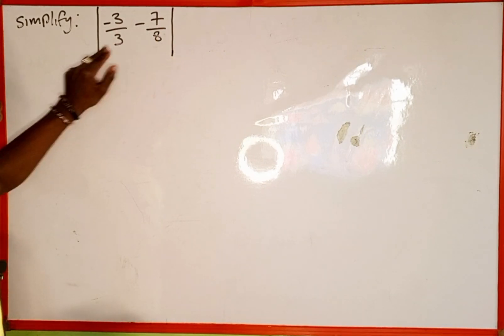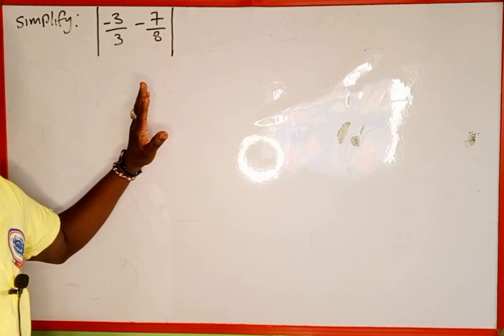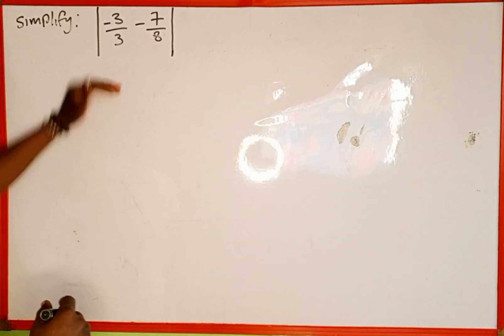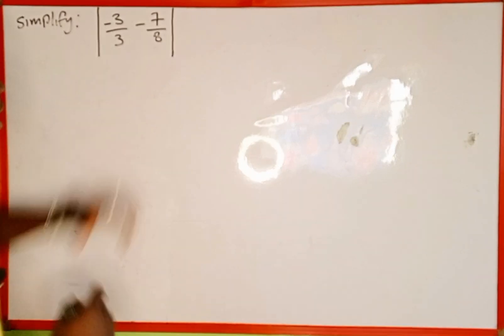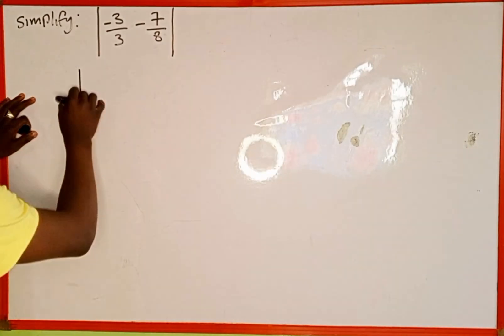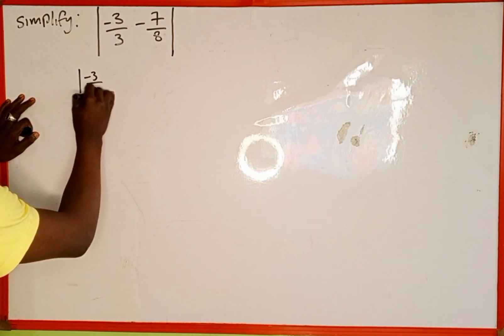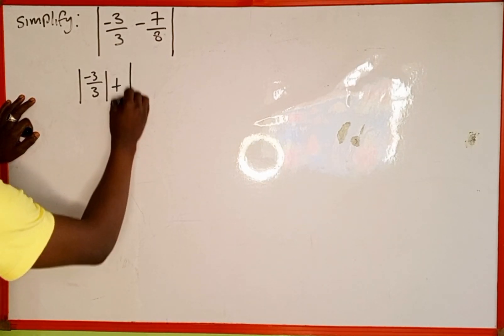This symbol you are seeing here is called absolute value. And this expression, according to one of the properties of absolute value, can also be split as absolute value of negative 3 over 3 plus absolute value of negative 7 over 8. So this is the same.